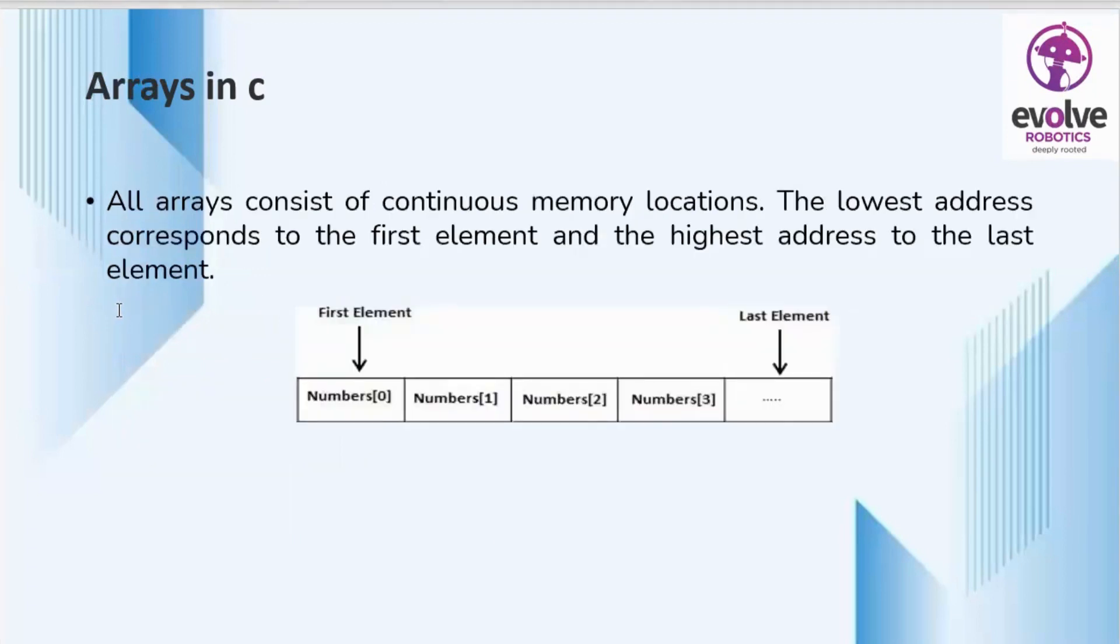An array consists of continuous memory locations. The lowest address corresponds to the first element and the highest address to the last element. We know that the first element is stored in the lowest memory location, then the last element is stored in the highest memory location.